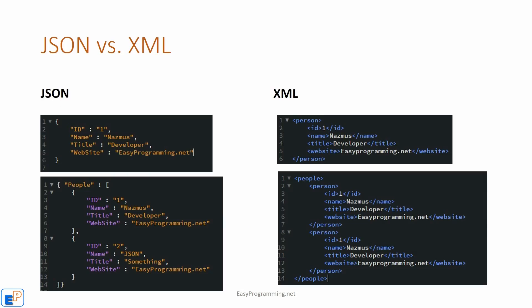So what does JSON look like? I have a couple of examples here of JSON and XML — they're both outputting the exact same thing. But as you can see, JSON is much shorter than XML. XML kind of looks like HTML because it has an open and close tag. They're both very readable, which normally means that they're self-describing.